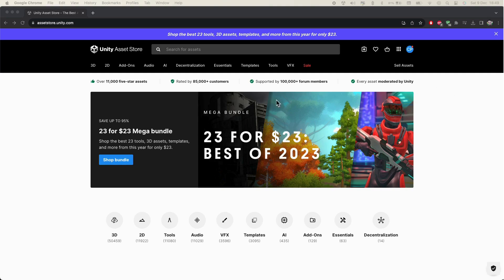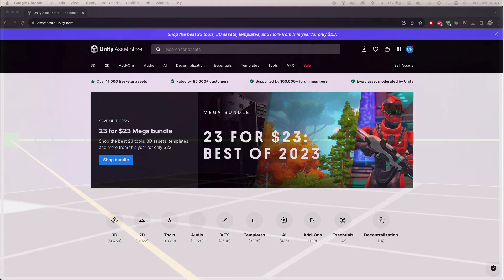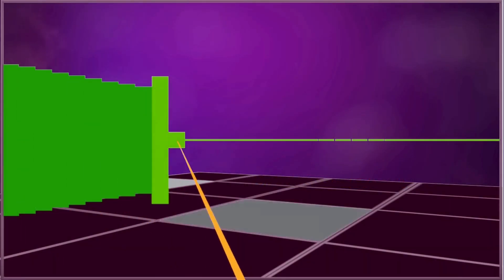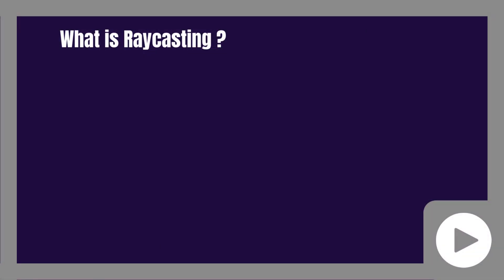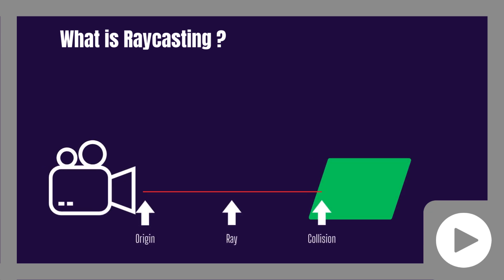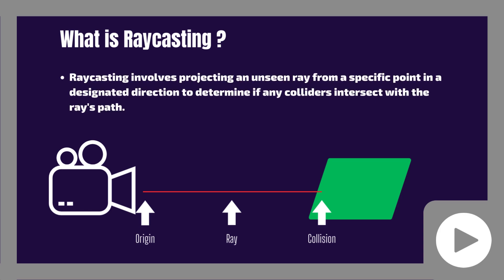Now let's delve into today's exciting topic: raycasting in Unity. Raycasting is an incredibly powerful tool in Unity, allowing you to interact with your game world in dynamic ways. Today we're going to focus on the basics — implementing raycasting so that when we click anywhere in our game, a ray is cast from the camera to the point where we click. This technique is essential for a variety of game mechanics, from shooting to object interaction.